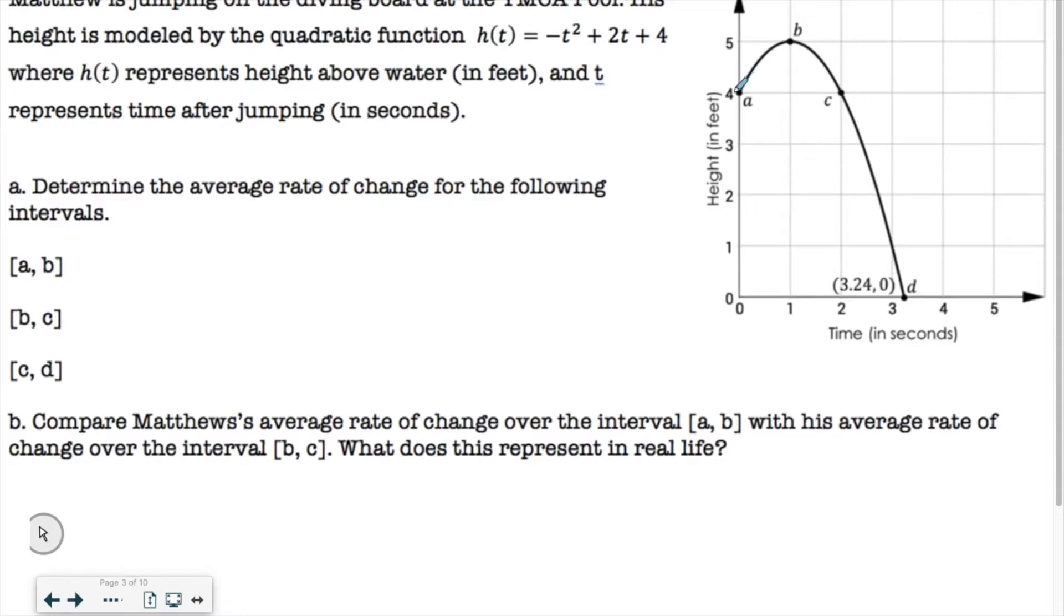All right, so again, you're going to look at these, and you're going from the second point to the first point. So this first y value is 5, and it goes down to 4. So that's going to be 5 minus 4, and your x value from the second point is 1, and from the first point is 0. So that's 1 minus 0. So you just subtract and divide. So 5 minus 4 is 1, 1 minus 0 is 1, and so your slope for a to b is 1.